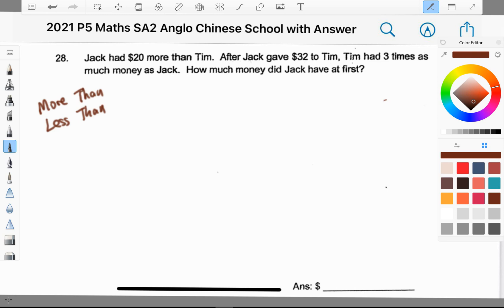This was taken from ACS Junior 2021, last year's P5 SA2 Maths. Being question 28, it's towards the end of paper 1 already. The first step of the annotation method requires me to use my pencil to do annotation. I will circle $20 more in pencil and point to Jack. The question is actually talking about more than, less than. You can see it in the question itself.